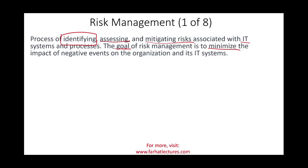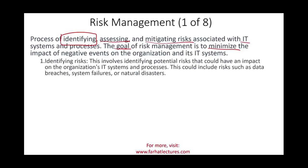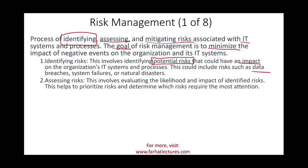Identifying risks involves knowing what you are exposed to — potential risks that could have a negative impact on the organizational IT systems and processes. Examples include data breaches, system failures, and natural disasters. Once identified, you assess the likelihood of each risk occurring. What is the likelihood — 5%, 15%, 80%? This involves evaluating the likelihood and impact of the identified risk, which helps prioritize them. The most important risks that are likely to occur need the most attention, so you can allocate resources accordingly.